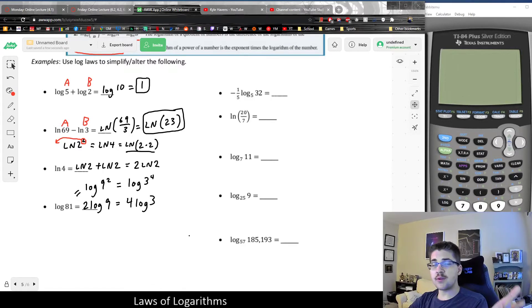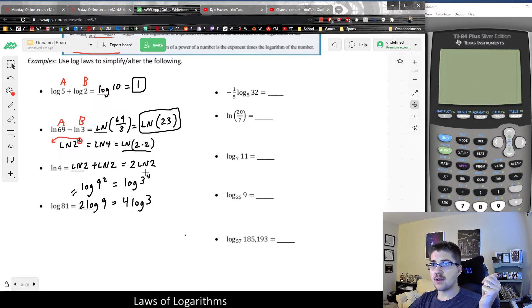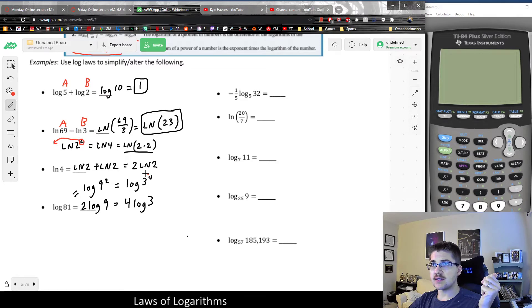You can also use log law number 3 to put a constant multiplier back into the logarithm. Like in these last two examples, I was mentioning how you could take the exponent from the logarithm and drop it out front like that.